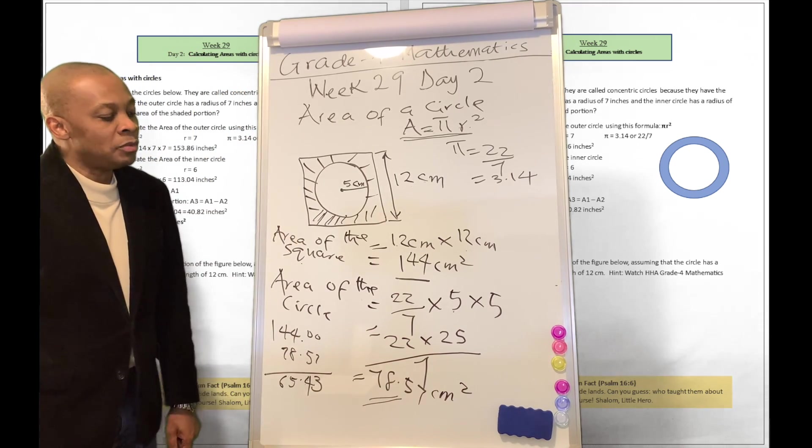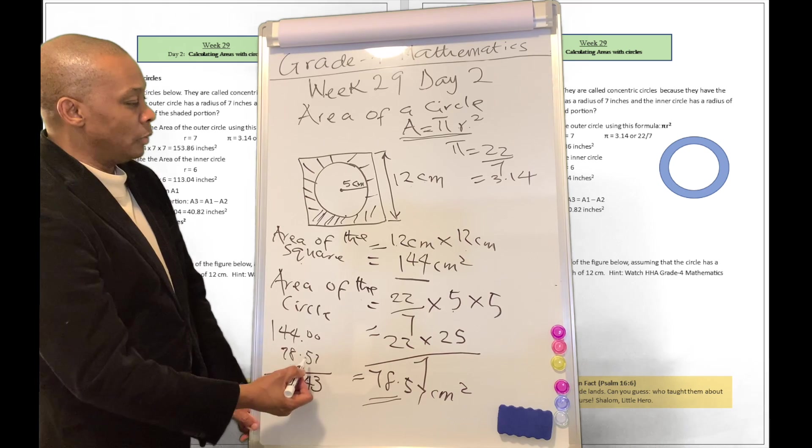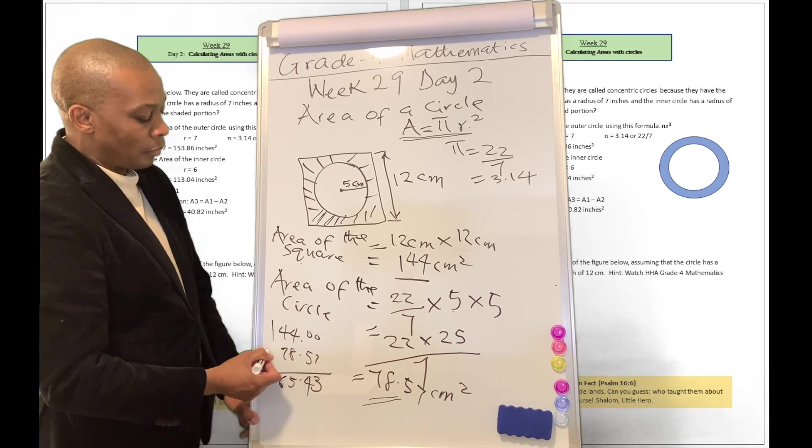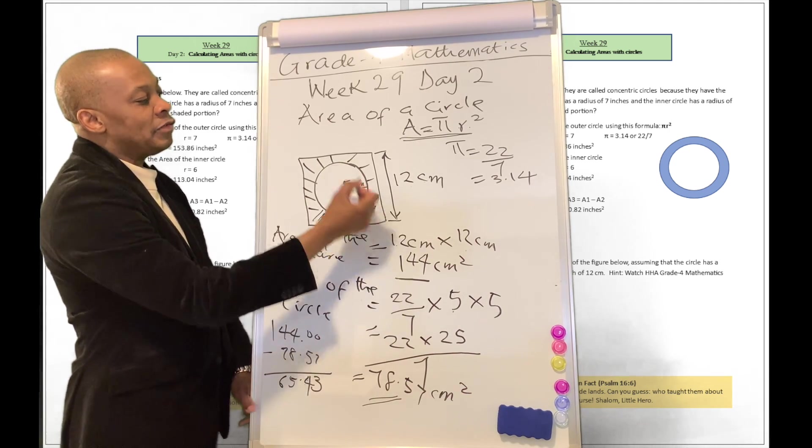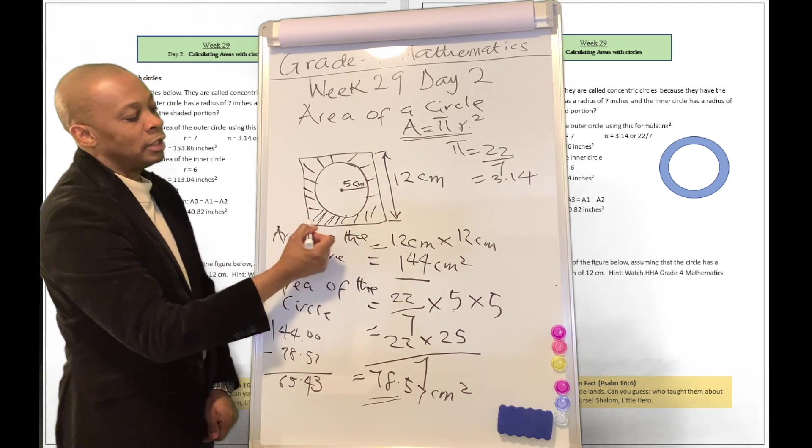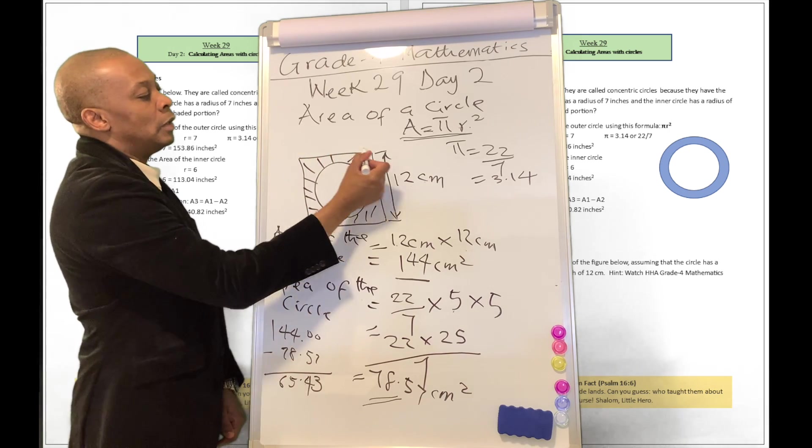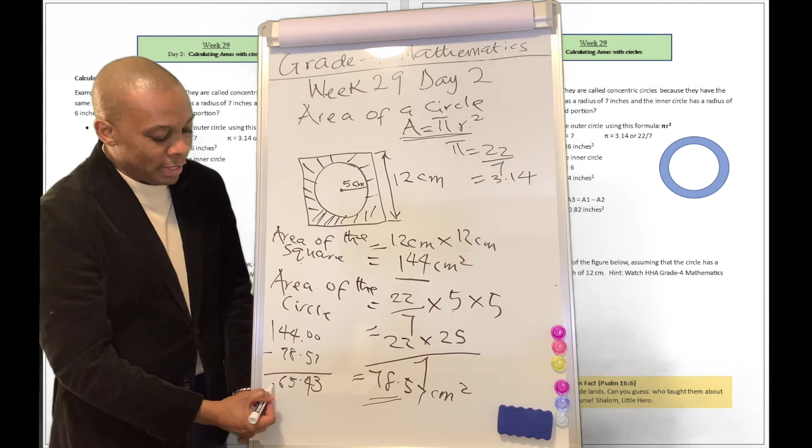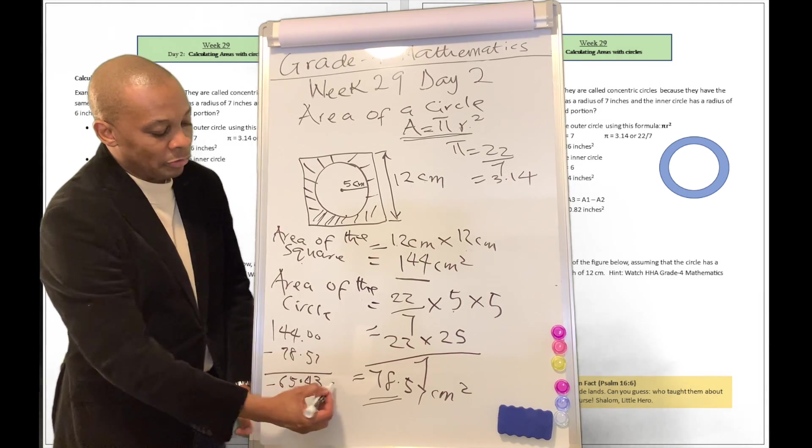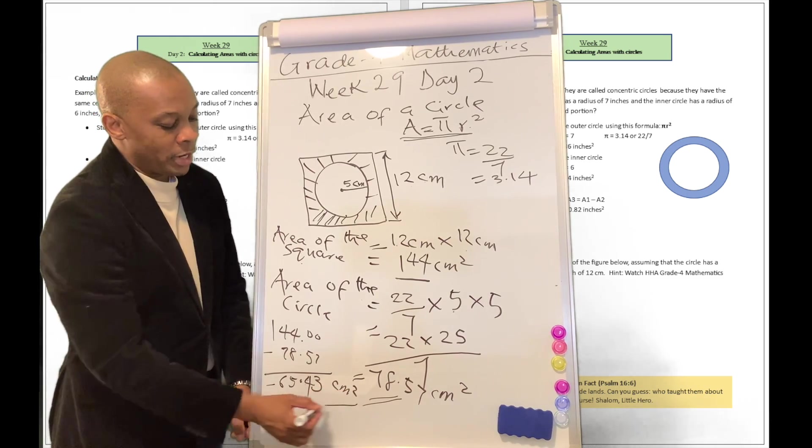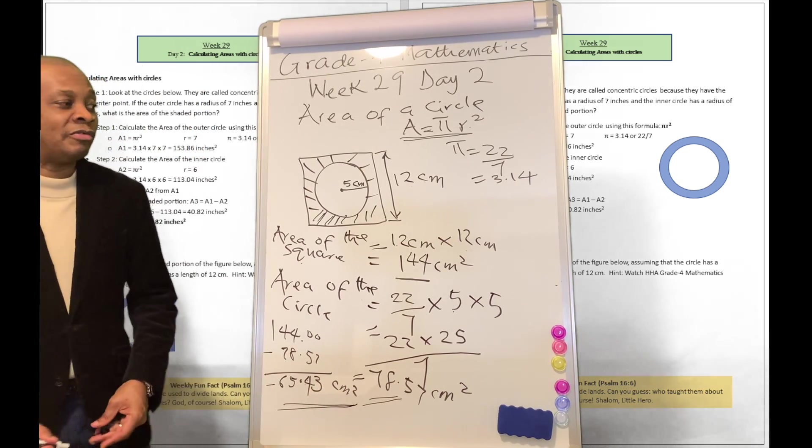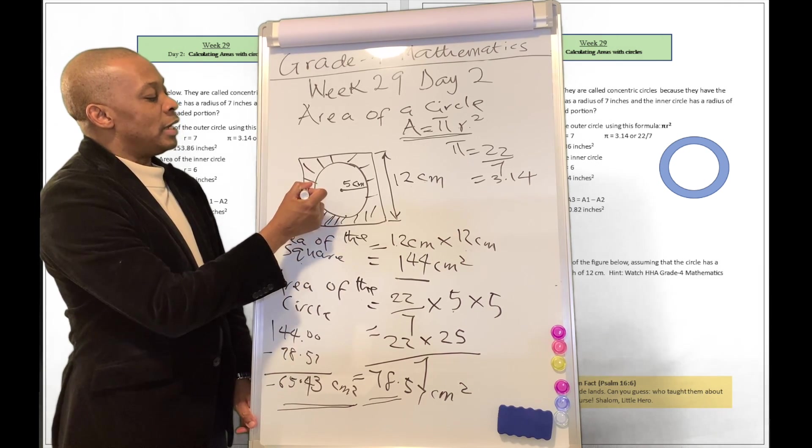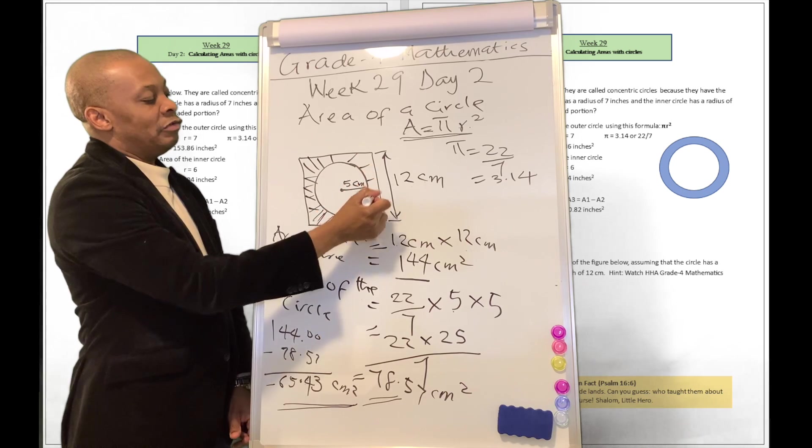All right. So what are we going to do? We are going to, right now, subtract the area of this circle from the area of the square. So the square has all this area. So when we take out the area of the circle, we're going to get 65.43 centimeters squared. 65.43 centimeters squared is going to be the area that is shaded on the board here for me.